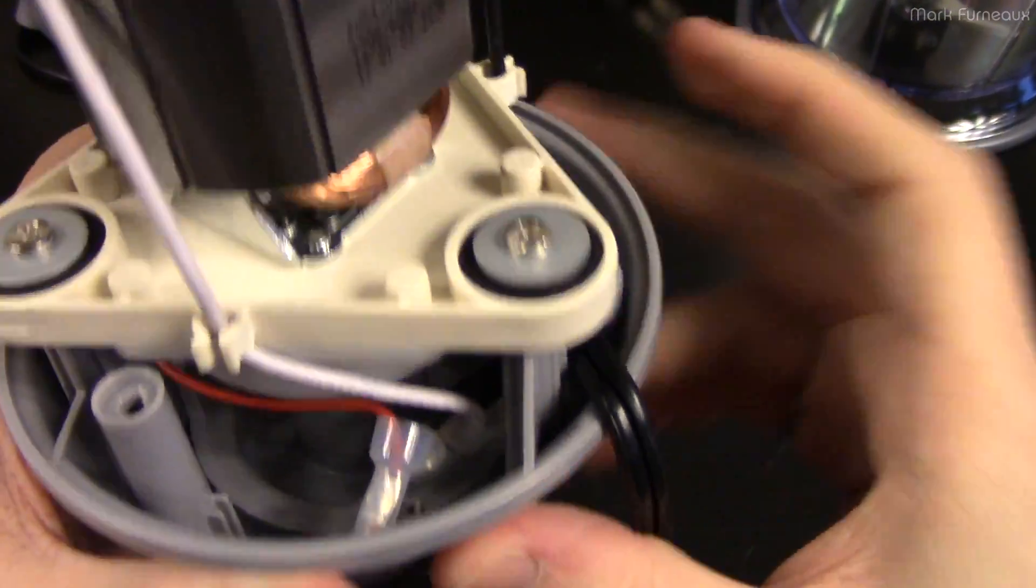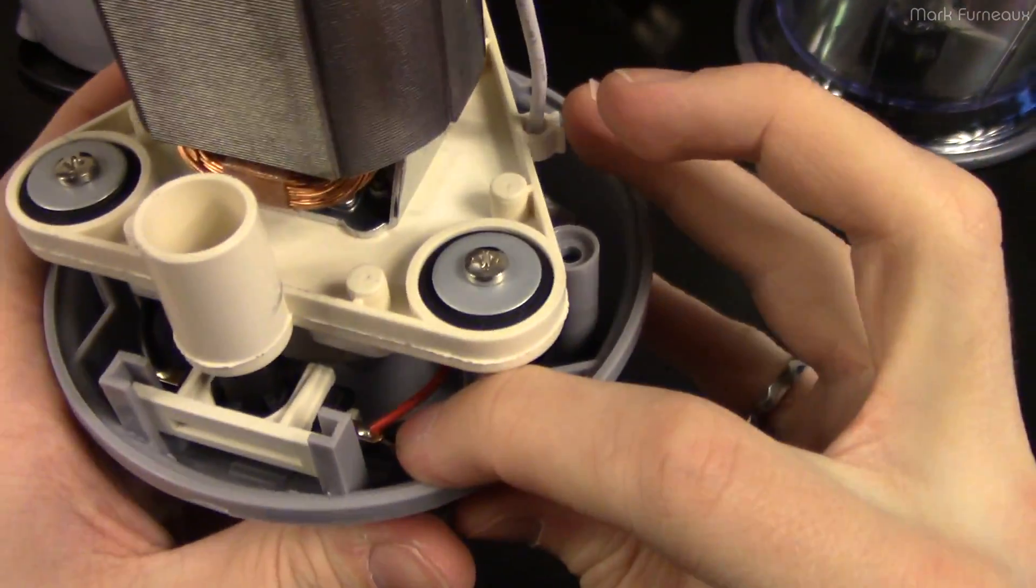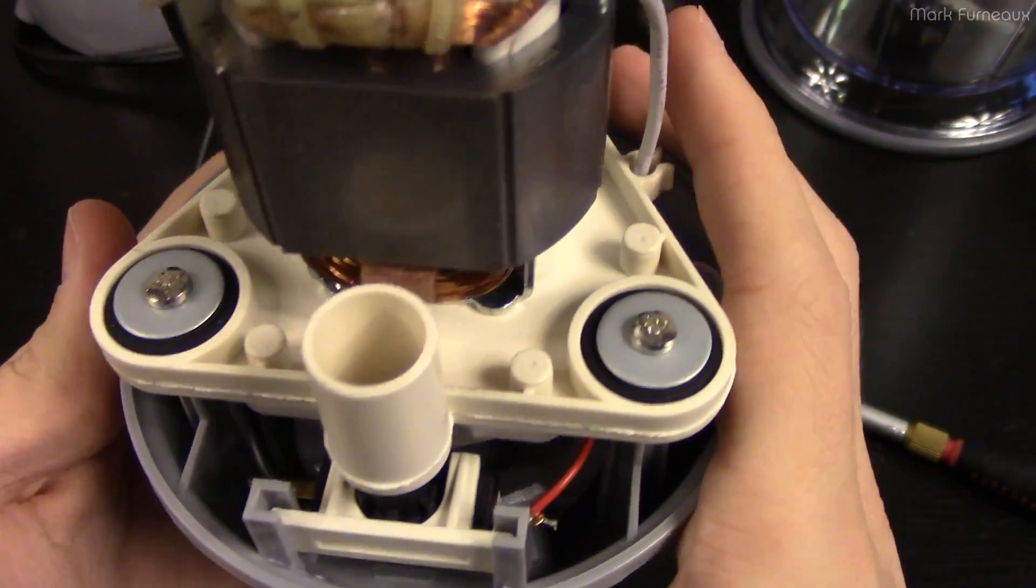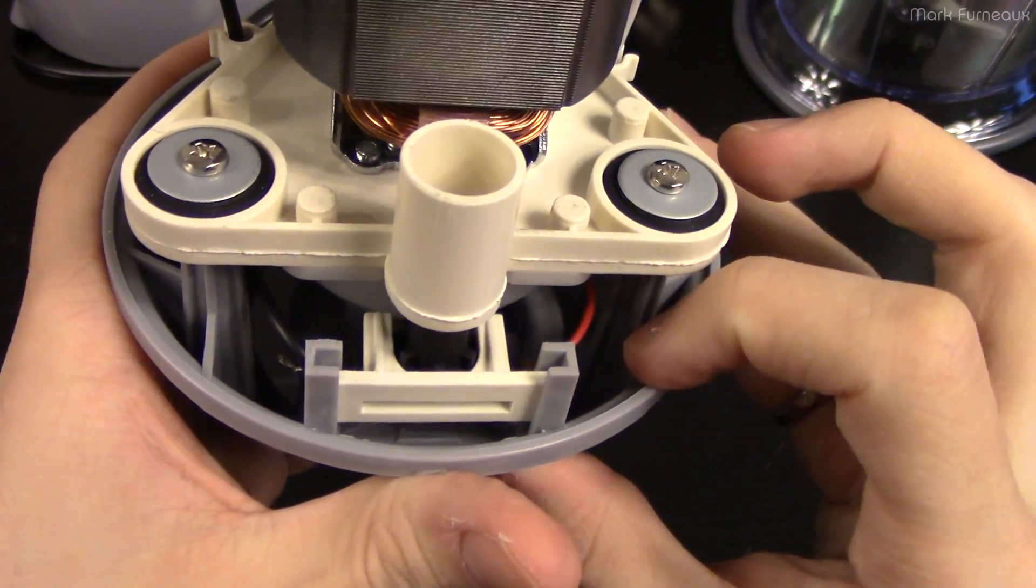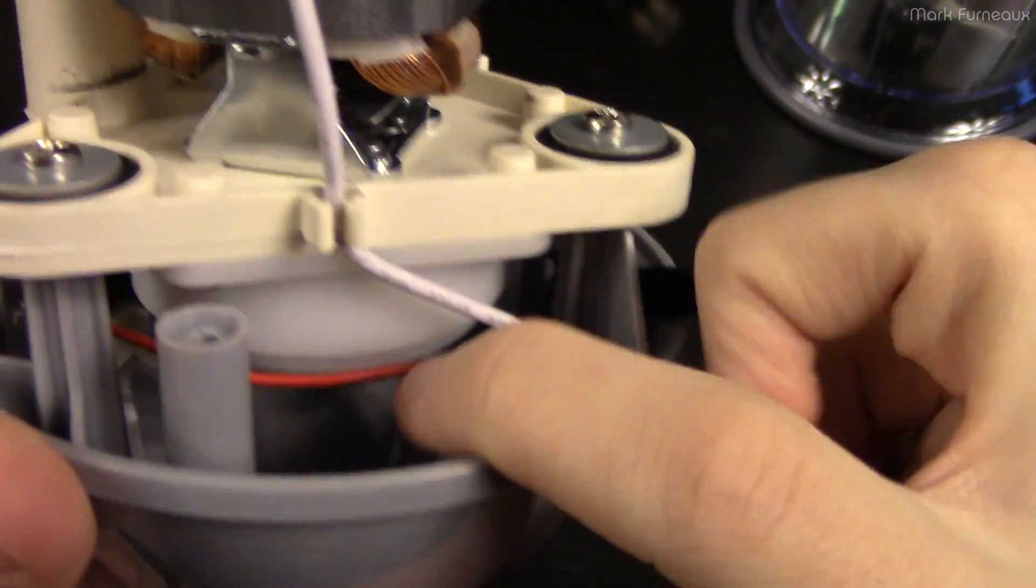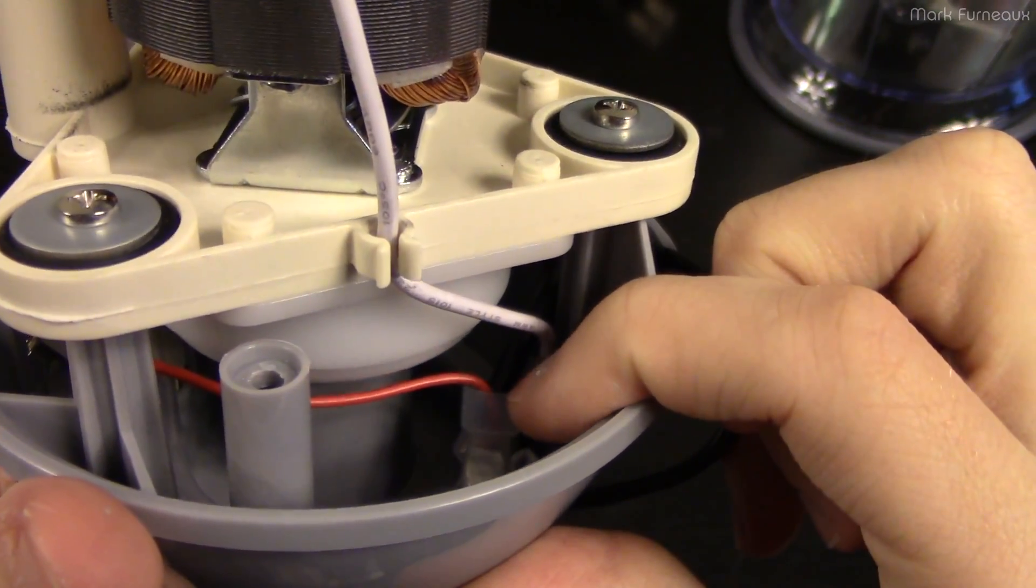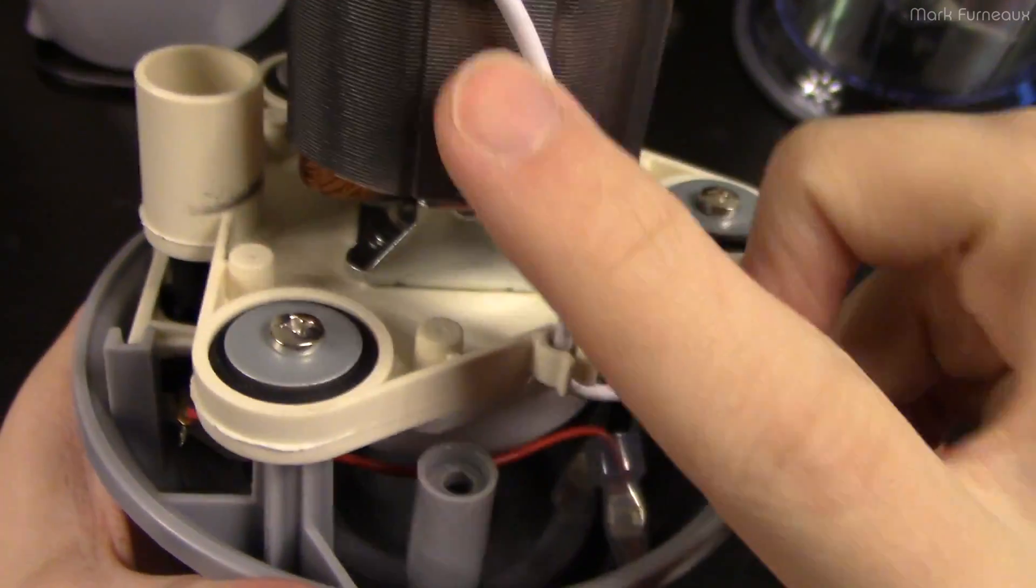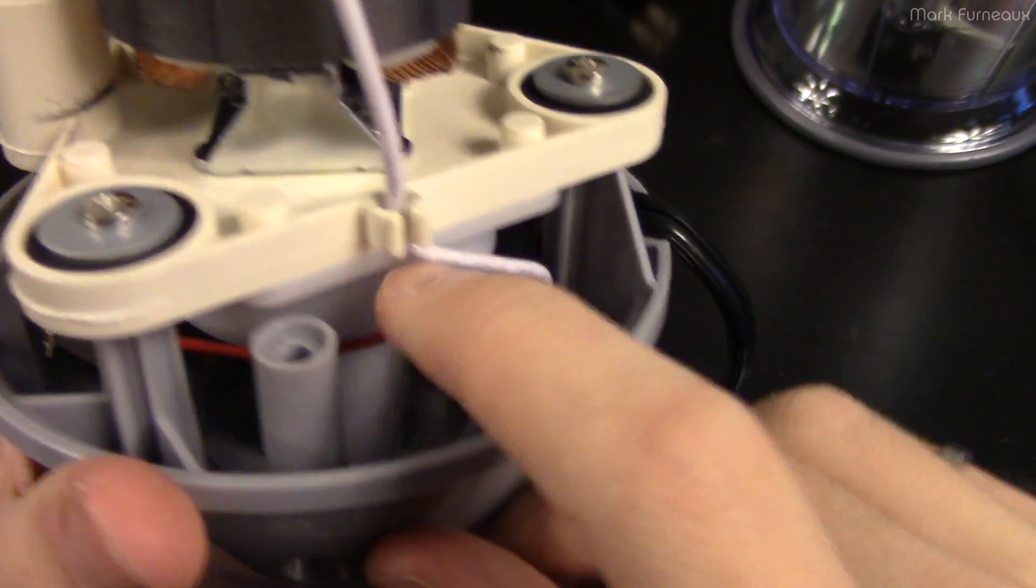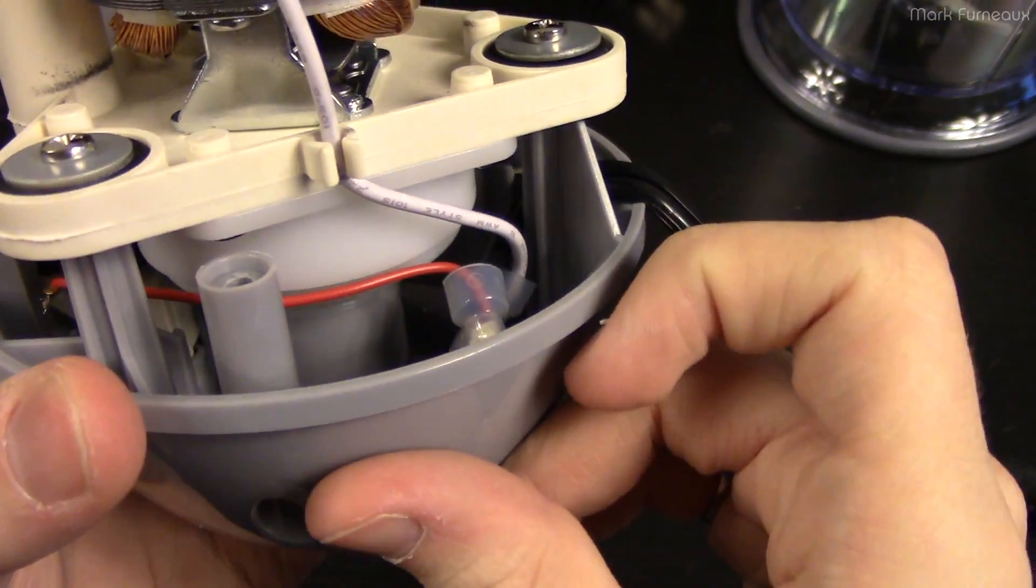And then they've got some crimp terminals. One goes under this white wire, which goes up to the motor, and the other one goes under this red wire, which goes to the switch. And so obviously then it's going to go through the switch and then back up to the motor. You notice that the gauge of this red wire is actually substantially thinner than the other wires. This is just that link between the switch and the mains. So I would say this wire is probably 20 or even 18 gauge possibly.